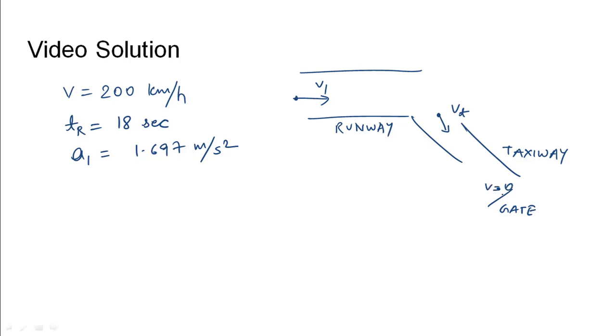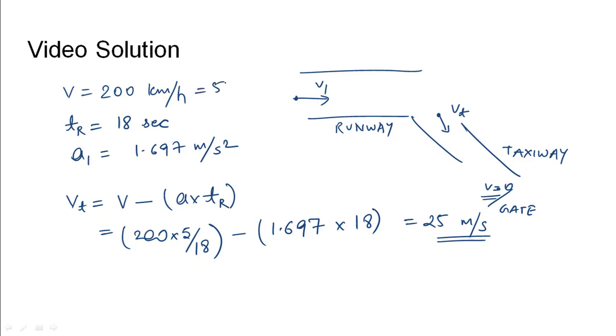To find vₜ, we use the first equation of motion: vₜ = v - a₁t. The initial speed is 200 km/h, which converts to meters per second using the factor 5/18. So vₜ = (200 × 5/18) - (1.697 × 18). This gives the taxiway speed as 25 meters per second, indicating the aircraft lands at 55.56 m/s, decelerates on the runway, and exits at 25 m/s.